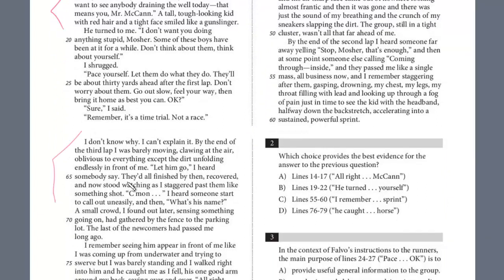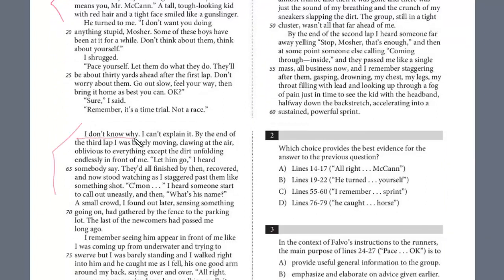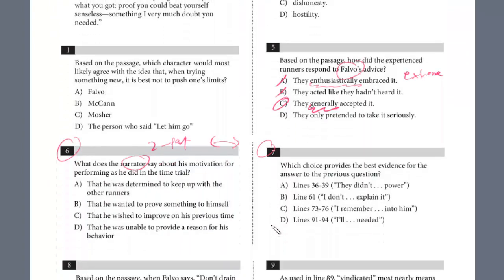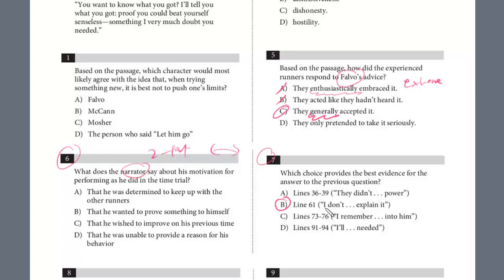The beginning of this paragraph: I don't know why I can't explain it. By the end of the third lap, I was barely moving, clawing at the air, oblivious to everything except the dirt unfolding endlessly in front of me. Here's the evidence. He doesn't know. He can't explain it. And so you just have to find those clues. And it is B, right? He couldn't explain it. And then to confirm that, question number six, definitely he wasn't able to provide a reason for his behavior. These really definitely fit together.